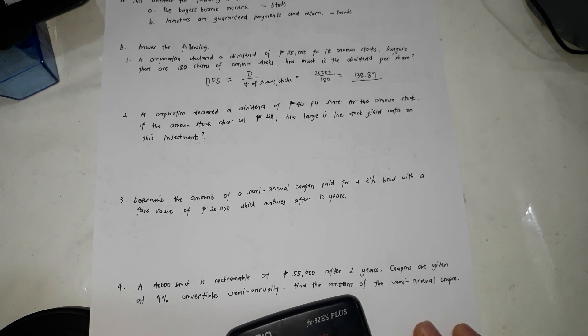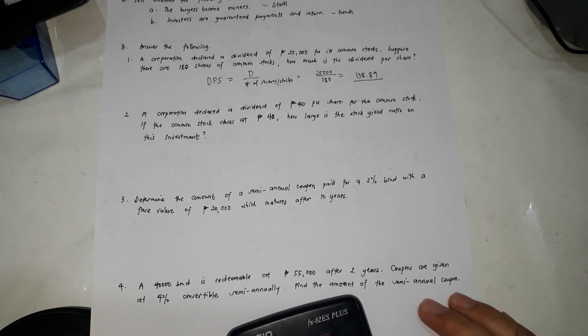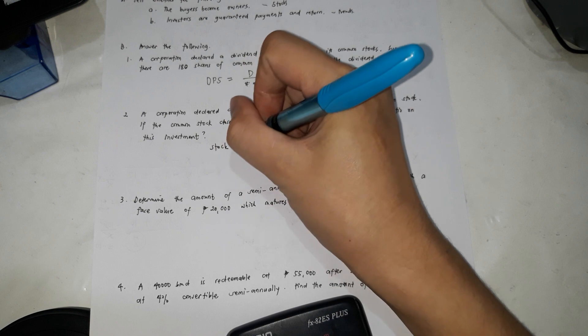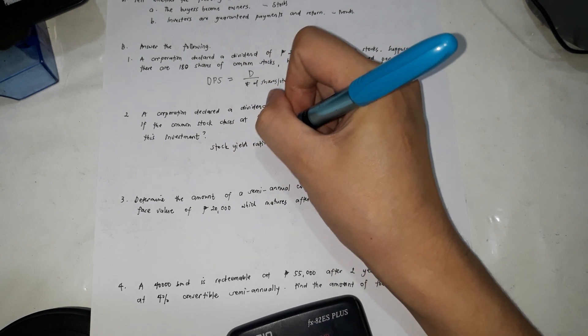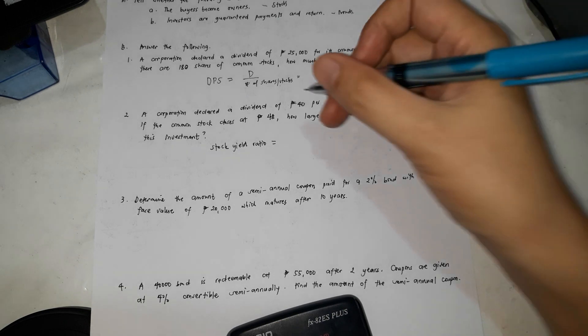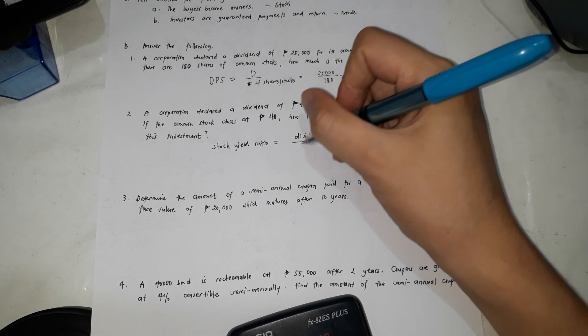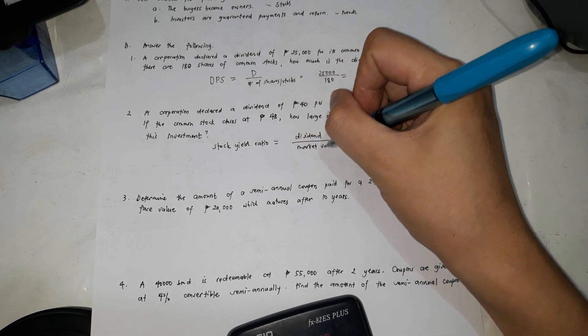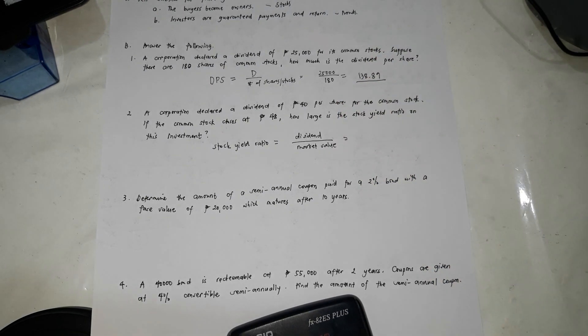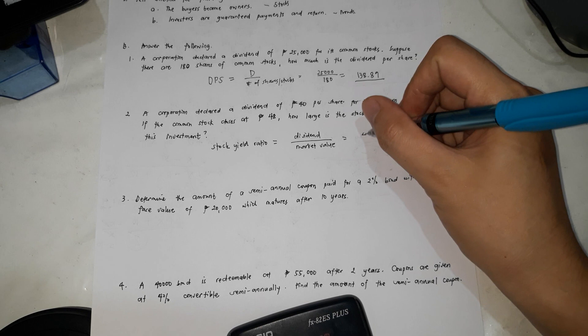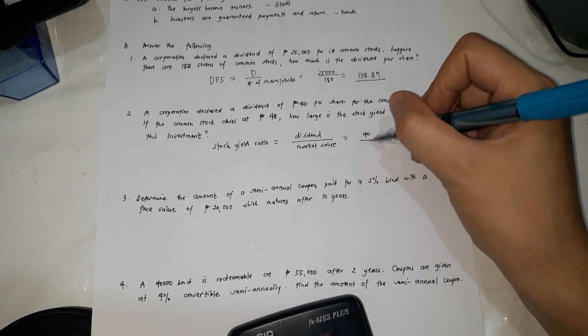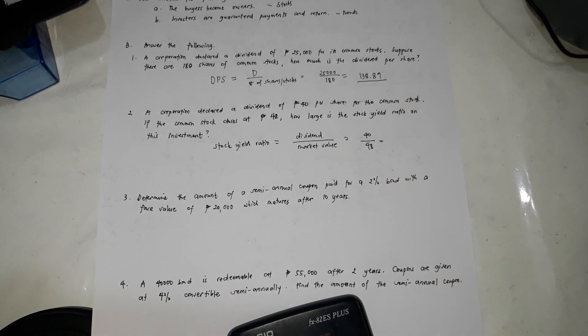Number two, a corporation declared a dividend of 40 per share for the common stock. If the common stock closes at 48%, how large is the stock yield ratio on this investment? So we're going to solve for the stock yield ratio. The stock yield ratio, what we're going to do is the dividend divided by the market value. So the dividend is 40 pesos, divided by the market value, which is 48.